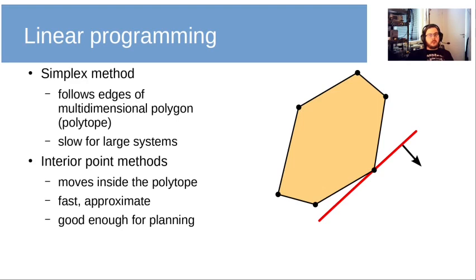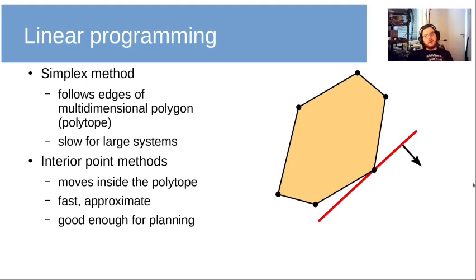For large systems, what's done instead is what's known as interior point methods, of which there are many. Here we start somewhere inside the polygon and through various methods move towards the optimum. A limitation of interior point methods is that they are approximate — they're quite fast, but you might only get a 99% solution. For our purposes, 99% is perfectly fine.